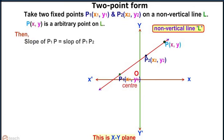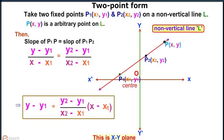Then the slope of P1P should be equal to slope of P1P2 which gives y minus y1 divided by x minus x1 equals y2 minus y1 divided by x2 minus x1. On rearranging we get y minus y1 equals y2 minus y1 divided by x2 minus x1 multiplied by x minus x1. This is the required equation of line.